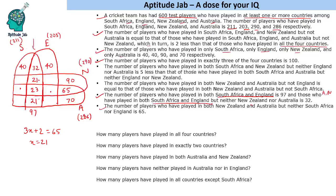The number of players who played in both South Africa and New Zealand but neither England nor Australia is 5 less than those who played in both South Africa and Australia but neither England nor New Zealand. So if the South Africa–Australia exclusive value is y, then the South Africa–New Zealand exclusive value is y + 5.